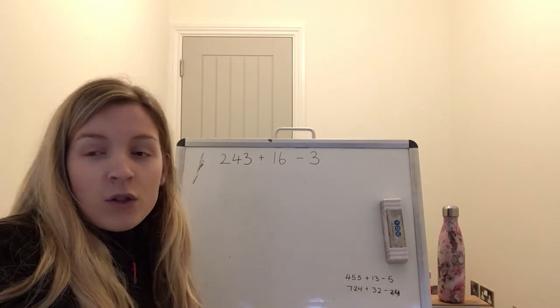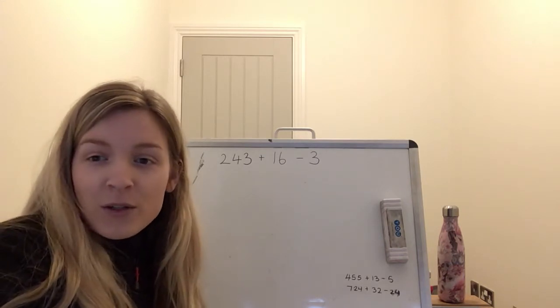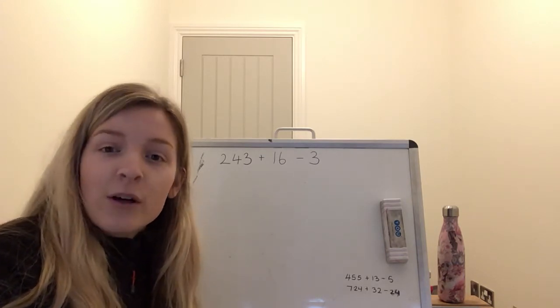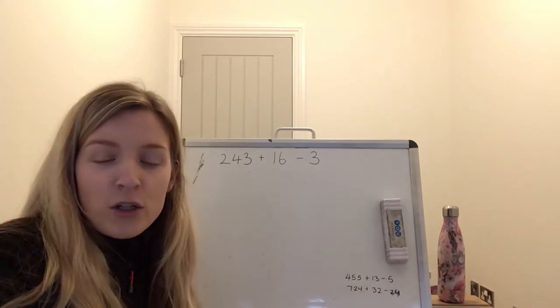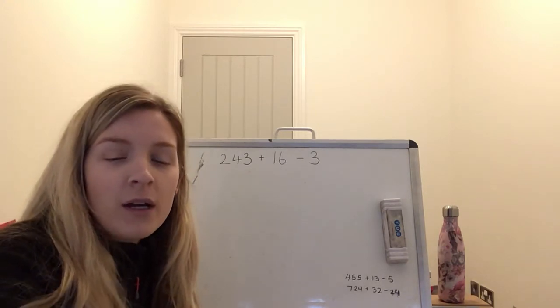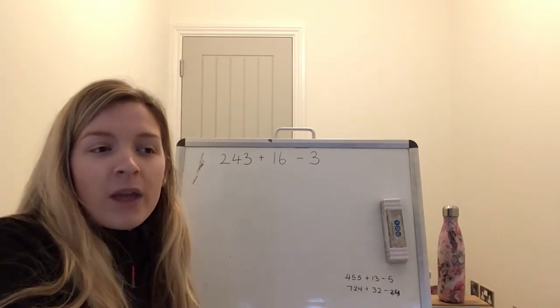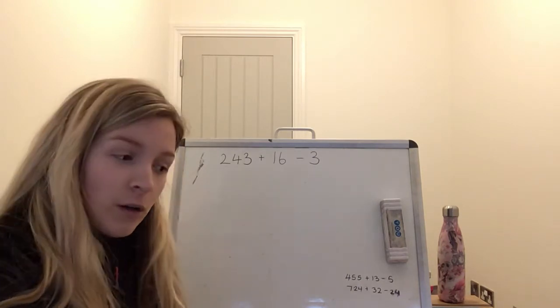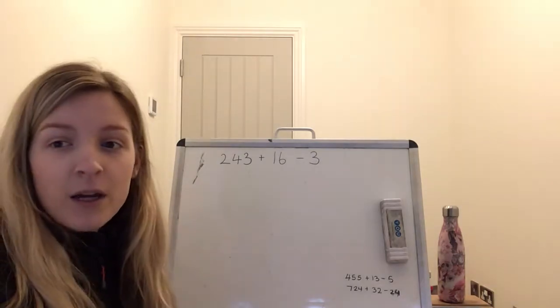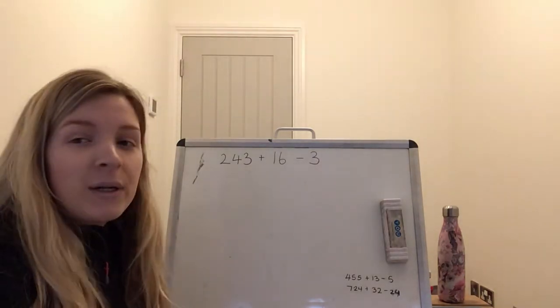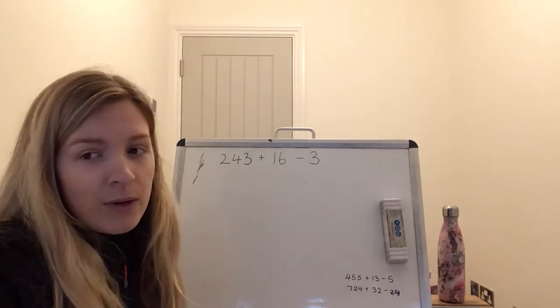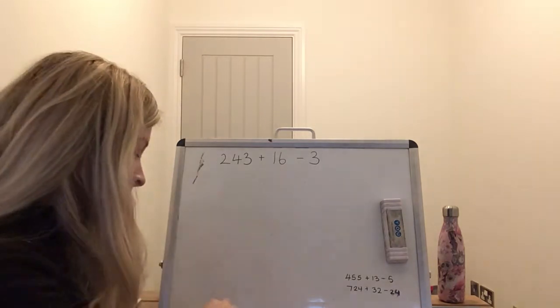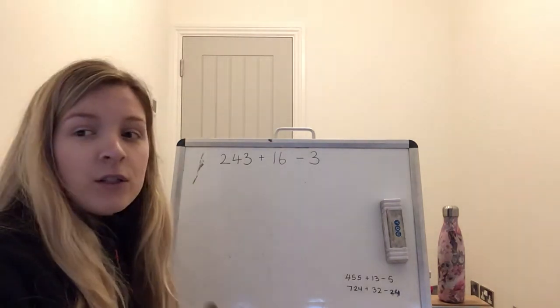So today and tomorrow we're going to be thinking about efficient strategies for working out some sums. Don't worry if you find this quite tricky. Just bear with me, have a go and let's start thinking about how we can do these sums in a quick and easy way. So I've written a sum on the board here, 243 plus 16 take away 3. Now, how are we going to do this?